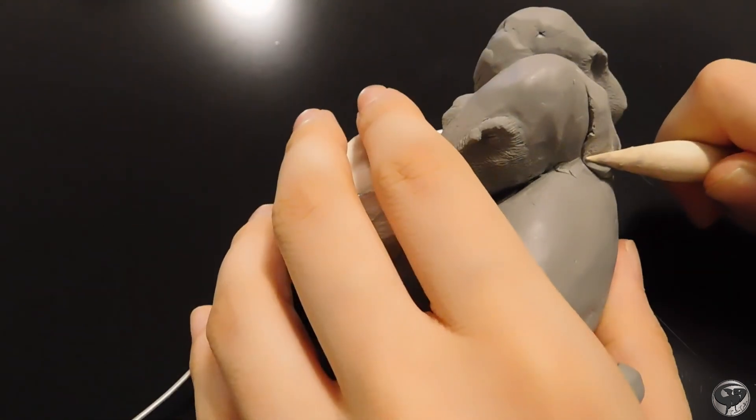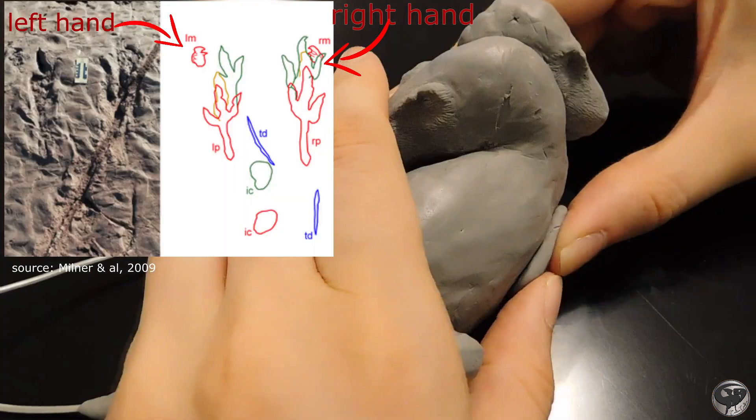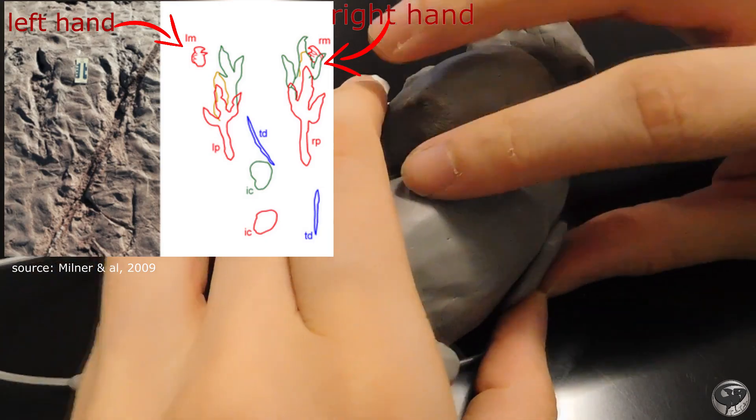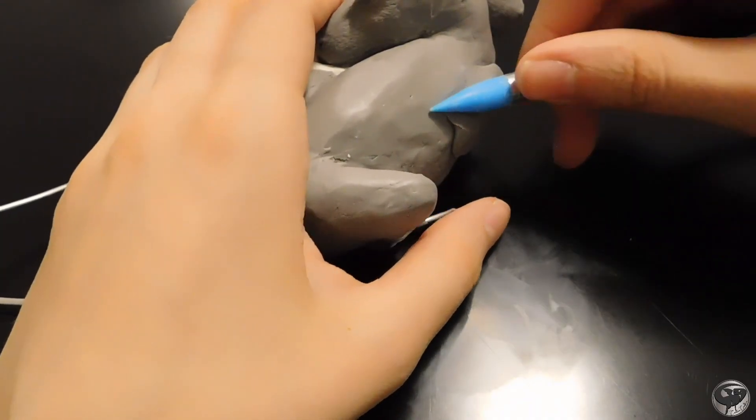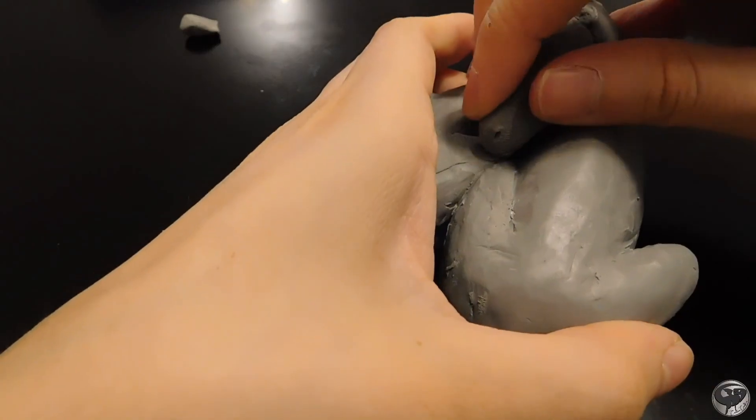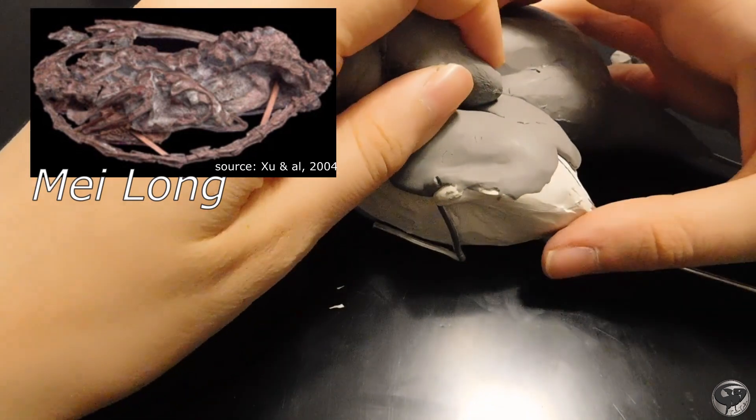I sculpted them both laying down. Fossilized prints have shown that theropods indeed laid down on the ground. I don't know of any fossil of a sleeping tyrannosaur itself, but a tiny theropod named Mei Long was found still curled in a sleeping position.